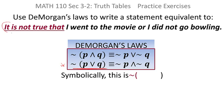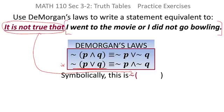So, the part that says it is not true that I interpret as a negation. So that's the negation symbol. And then I'm negating everything that comes after that. So I need some parentheses. And that's why they're there.